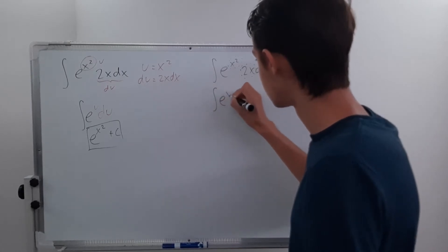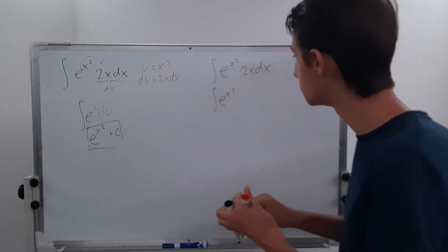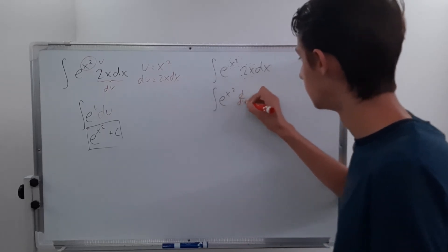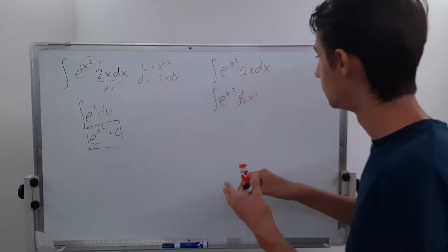So you have e to the x squared times the derivative, d dx, of x squared, dx.